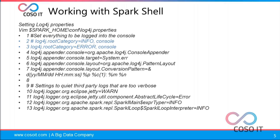Parameters like executor cores, number of executors, and all of the other parameters also. Suppose I'm using a Kafka library — it will also show me that the library is imported. So all of the debug information it will show. But if I don't want to show all that basic information, then I will change my log4j property.